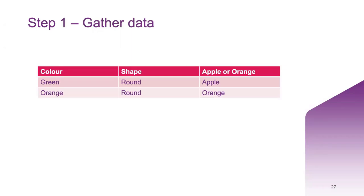Step one is to gather the data. For developing our machine learning model, the first step is to gather relevant data that can be used to differentiate the two fruits. You can use different parameters to classify a fruit as either an orange or an apple, but for simplicity I've taken two features: the first being the colour and the second being the shape. Using these features, we would hope our model can accurately differentiate between the two fruits. Typically you might have a model with far more features, but we'll be using just two today.